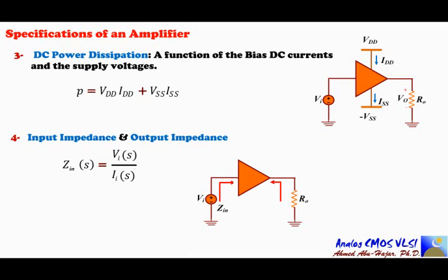The output impedance Zout is the impedance looking into the output of the amplifier. Zout can be calculated using several techniques — one is the Thévenin technique, where Zout(s) = Vout open-circuit over Iout short-circuit. It can also be calculated using the test voltage and test current method, among other methods.